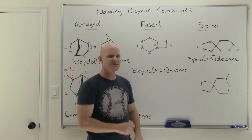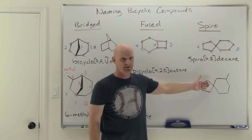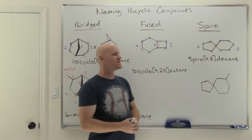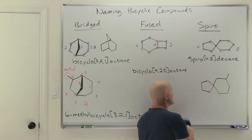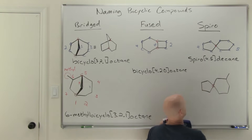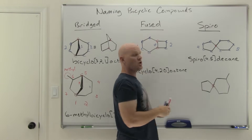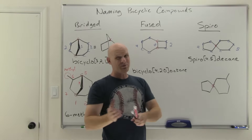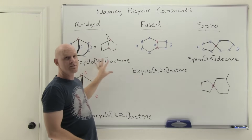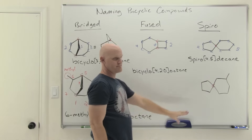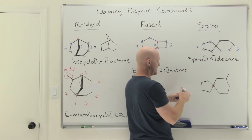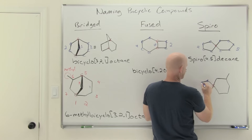One last example: what do you do with a substituent on a spiro compound? You have to learn how to number these as well. The spirocarbon does not get designation number one — that's tricky. Whereas with a bridged bicyclic we made one of the bridgehead carbons number one, here it's not going to be the spirocarbon. We have four carbons on one side and five on the other.